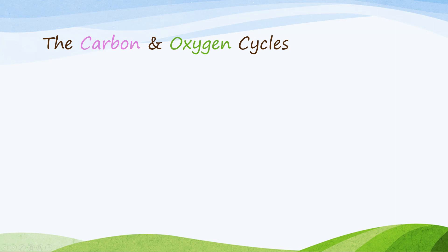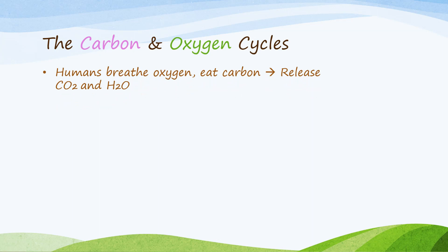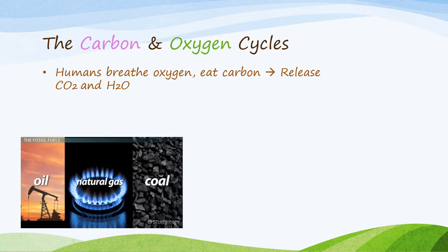Humans also have an effect on the carbon and oxygen cycles. We breathe in oxygen and get carbon from eating plants and animals, and as a result we breathe out carbon dioxide and water vapor. However, we also cause a lot of extra carbon dioxide to be released. Perhaps you have heard of fossil fuels — these are oil, natural gas, and coal. These are natural resources found deep underground, made from fossilized plants and animals that died long ago and were put under a lot of heat and pressure. These fossil fuels have stored chemical energy in them, and when we burn them for power and fuel, they release carbon dioxide into the air.